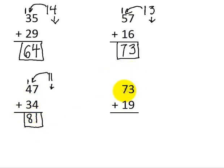Finally, in this last problem, we have 73 plus 19. So 3 plus 9 is 12. As always, the 1's value, 2, comes down. The tens value goes to the left.